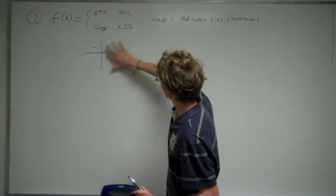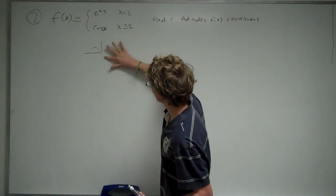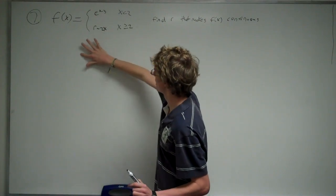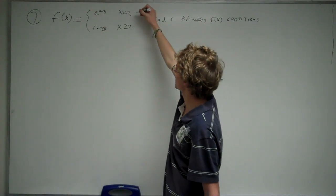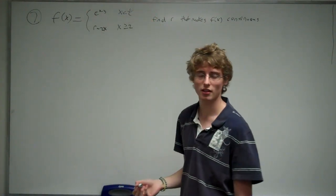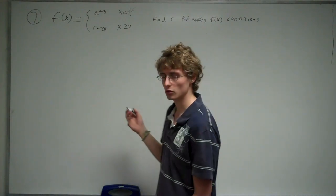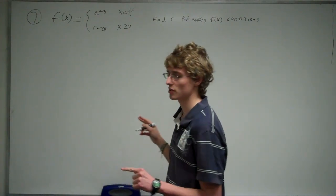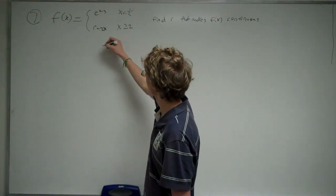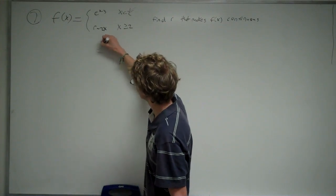So to do that, you want those graphs to intersect at the point x equals two. So to find out where those graphs intersect at the point x equals two, you would set those two equations equal to each other.